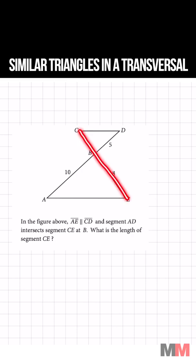What is the length of CE? The first given information that we get is that AE is parallel to CD.